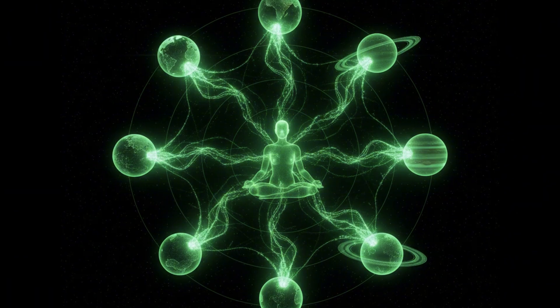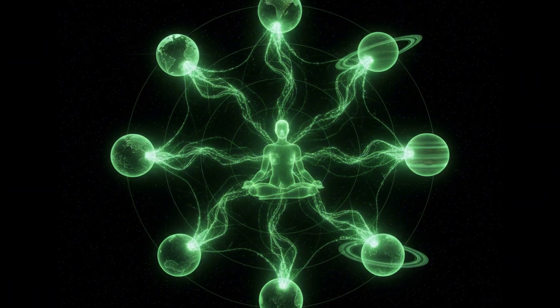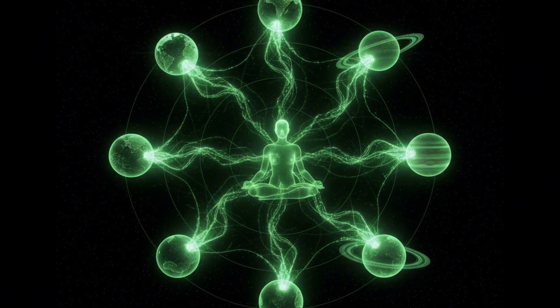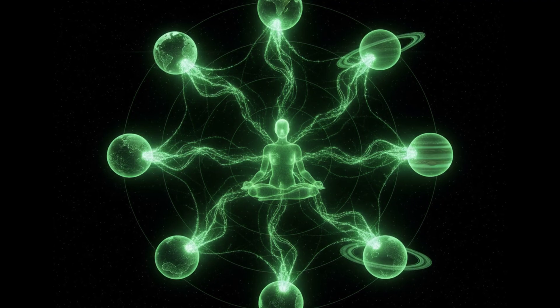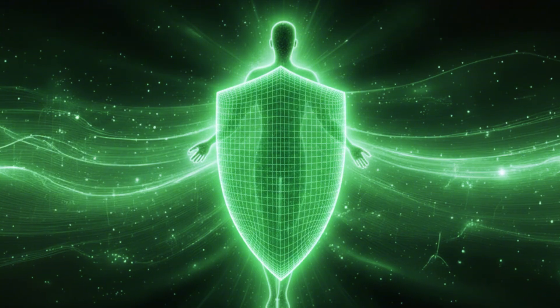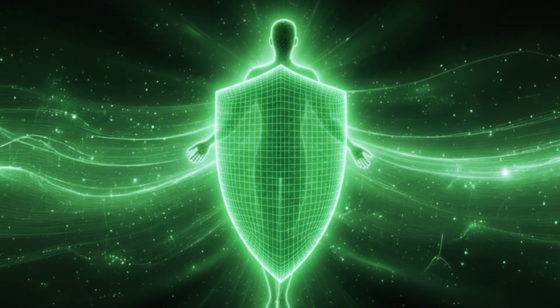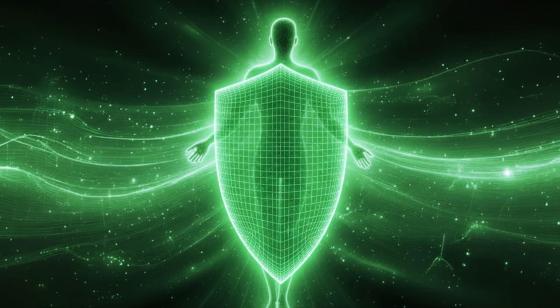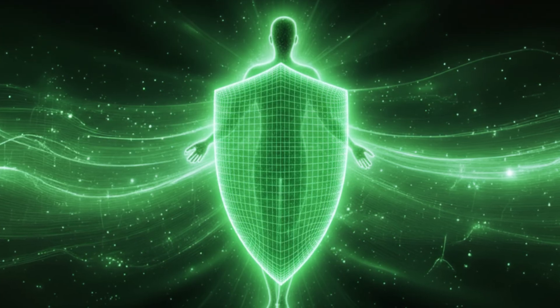The brain's frequency spectrum: Alpha waves, 8 to 12 hertz—Relaxation, awake meditation, creative thinking. Theta waves, 4 to 8 hertz—Deep meditation, dream states, hypnosis, deep learning.